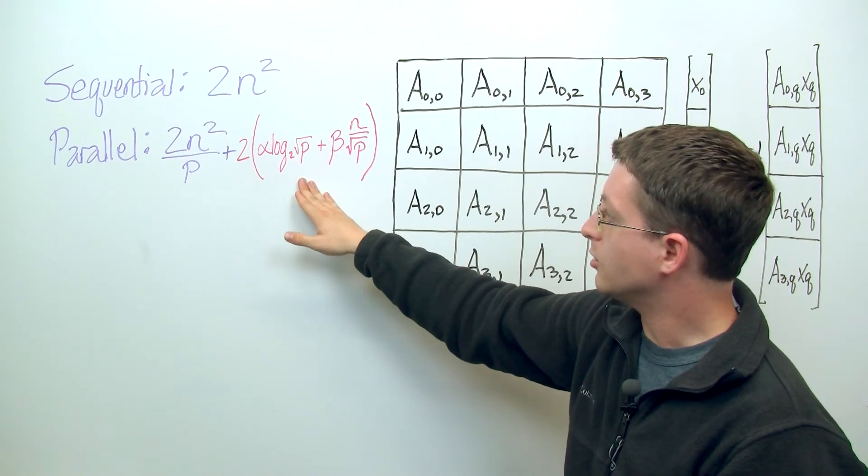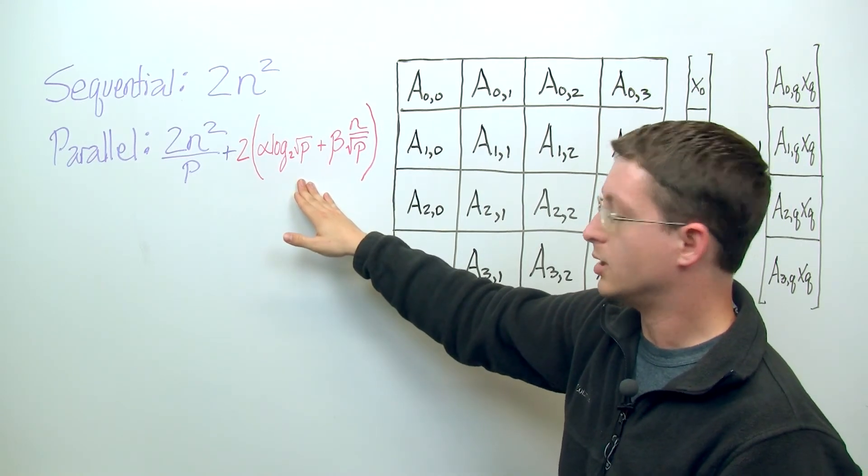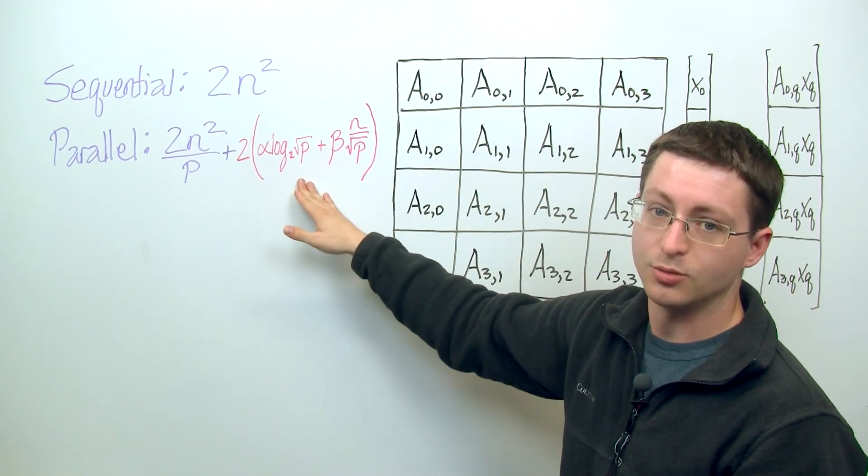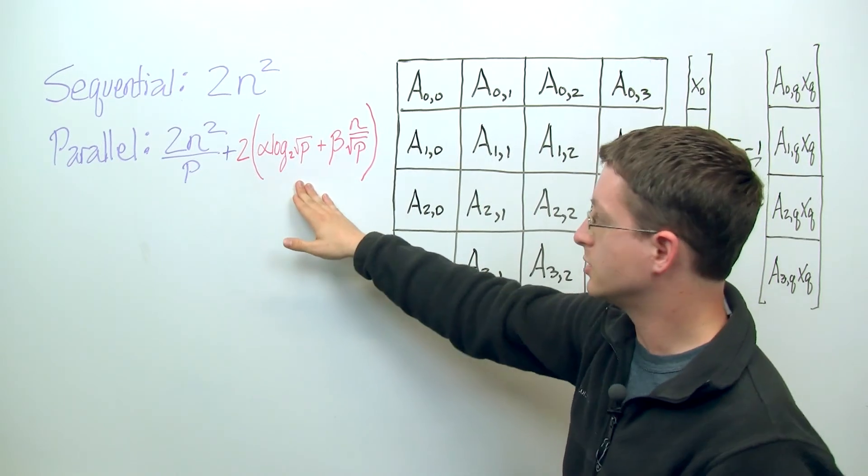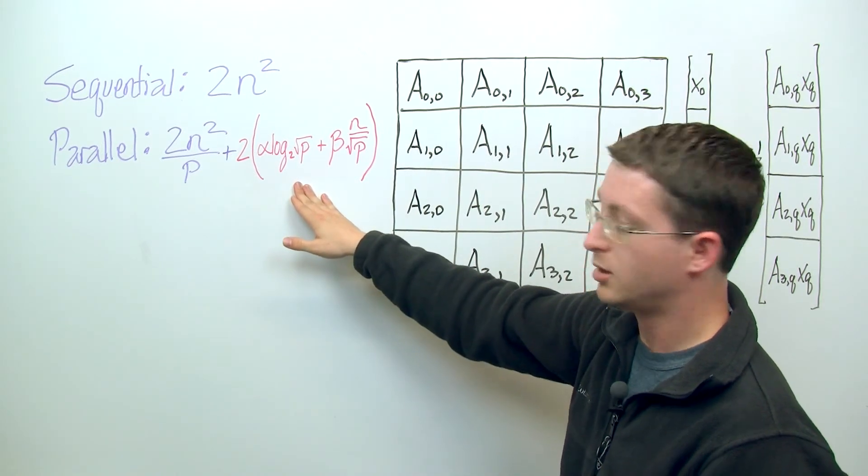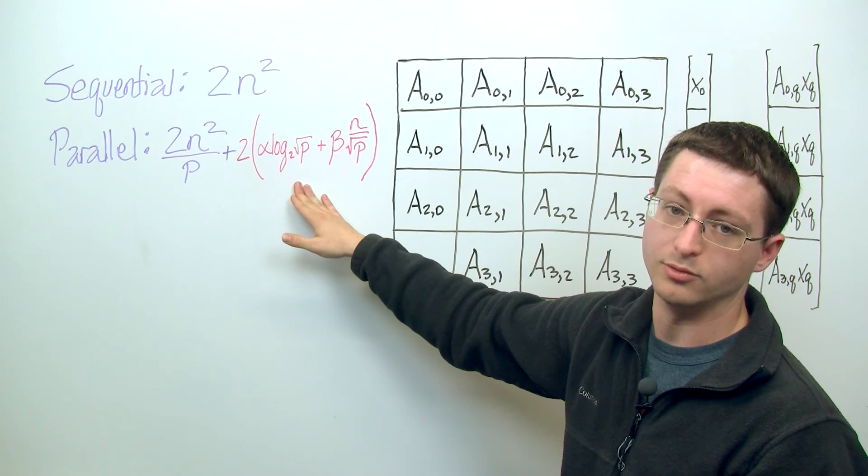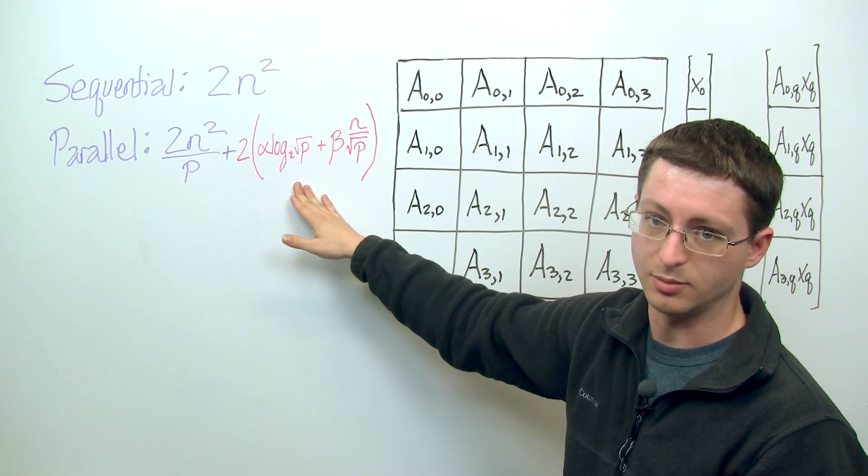So if you recall, the original one-dimensional distribution had a runtime that was at best order of n. So we see that by switching to a two-dimensional distribution, we can get the runtime down to order of log 2 of n, which is significantly better.